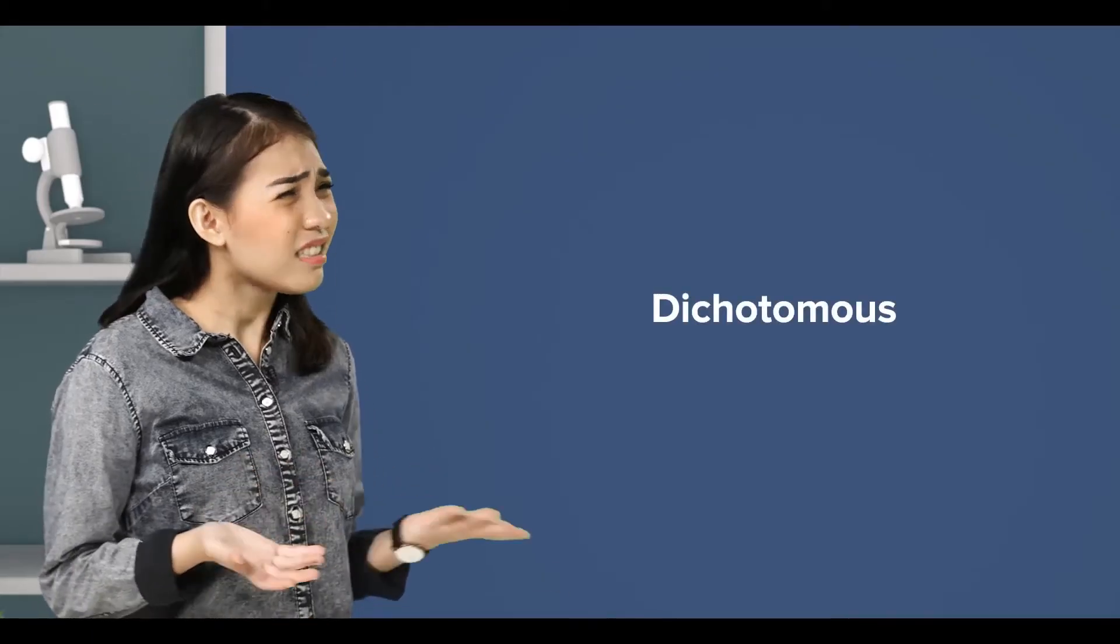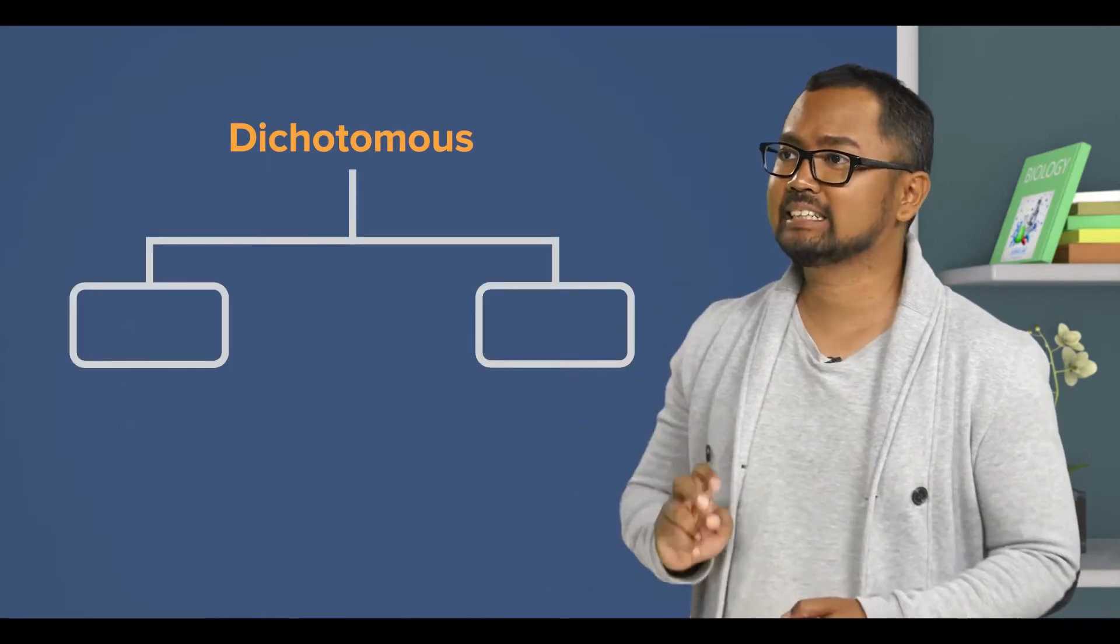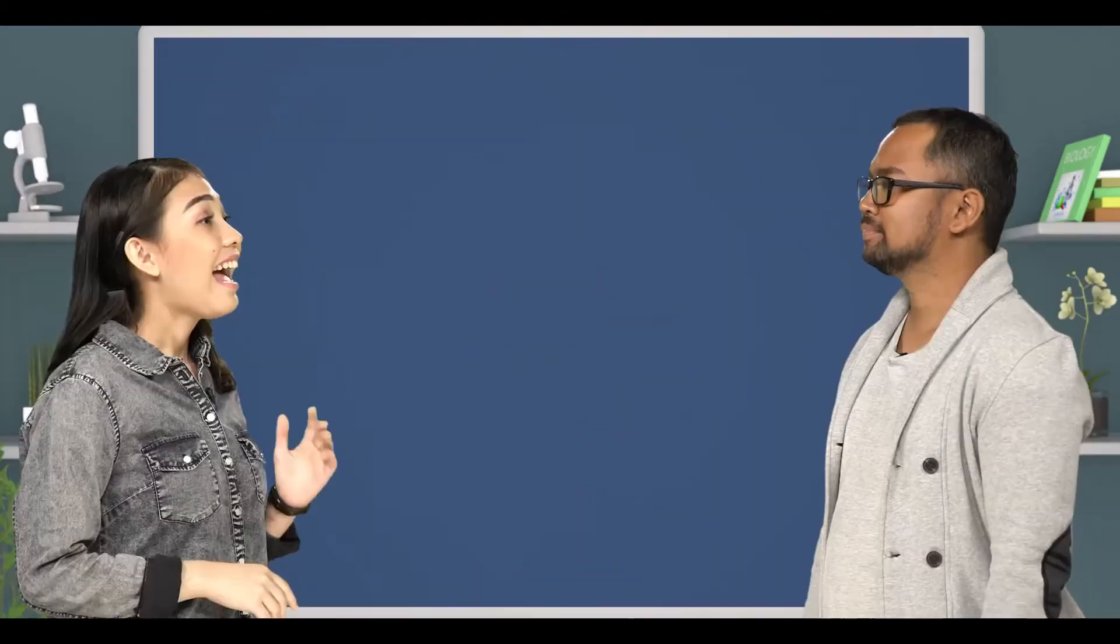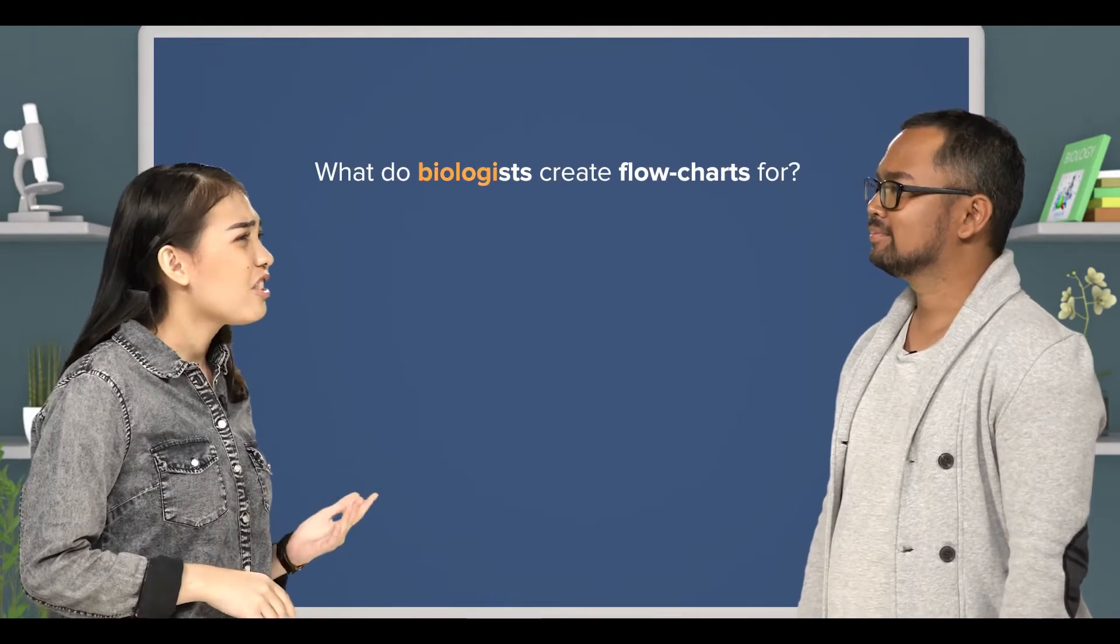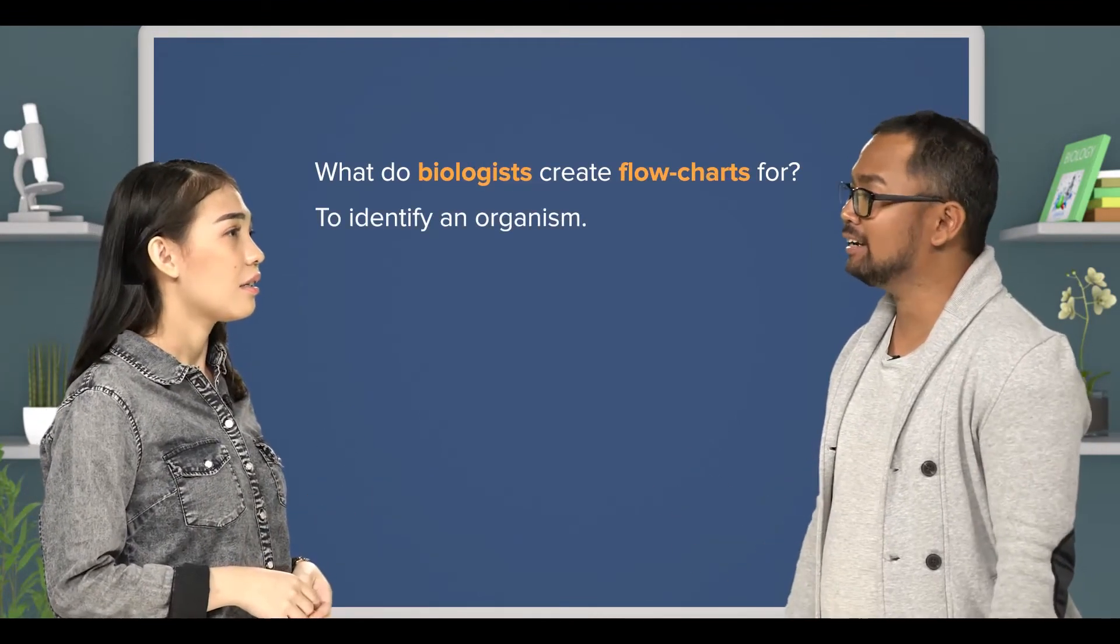Dichotomous because? Because dichotomous means two branches, just like the flowchart you showed. I see. So what do we biologists create flowcharts for? To identify an organism, of course.